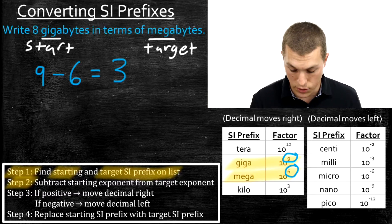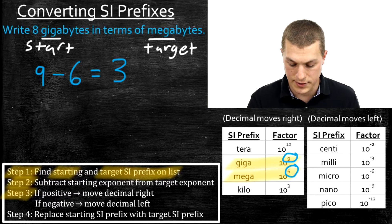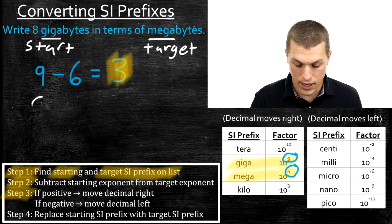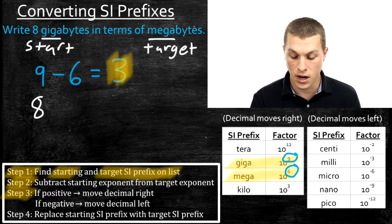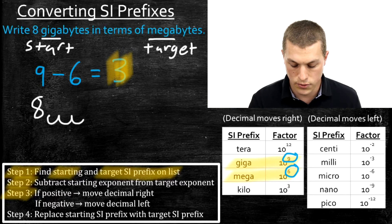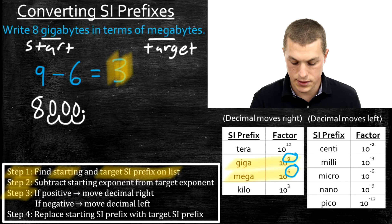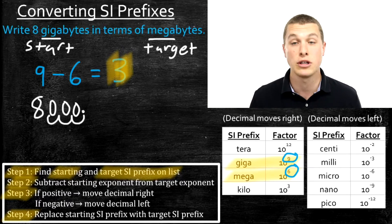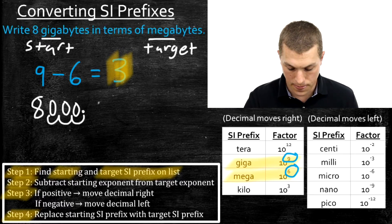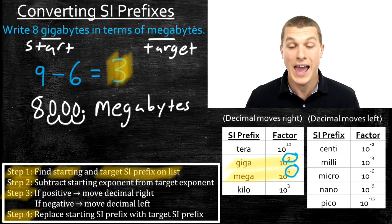Step three tells us: if our answer is positive, we're going to move our decimal to the right. Our 3 is positive, so we take our 8 gigabytes and move the decimal to the right 1, 2, 3 times, filling in zeros. Step four says replace our starting SI prefix with our target SI prefix, so 8,000 is now in megabytes. So 8 gigabytes is 8,000 megabytes.